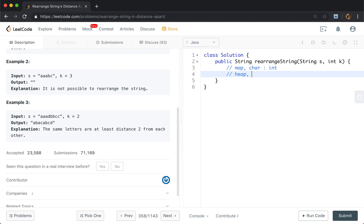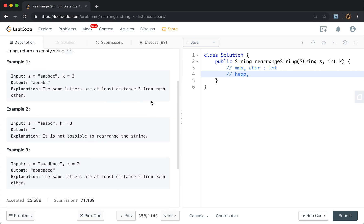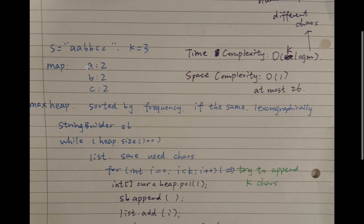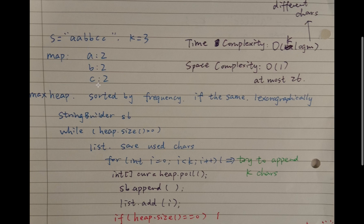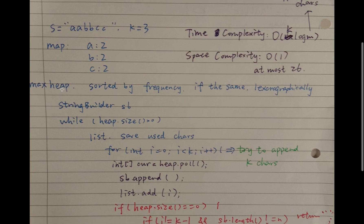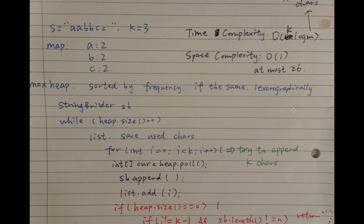Why exactly do we perform this algorithm? At first we iterate the string and get the frequency of each character. Then we use a max heap sorted by frequency — we always append the most frequent character. In this example, 'a', 'b', 'c' have the same frequency, so they need some order. In the first round we append 'a', 'b', 'c'. In the second round we also append 'a', 'b', 'c' — we cannot break that order. So if they have the same frequency, we sort them in lexicographical order.